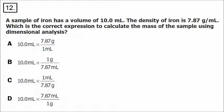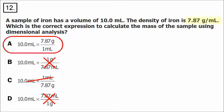Number 12 is a unit conversion. We're starting with 10 milliliters and have to convert from milliliters to mass in grams. We want milliliters on the bottom and grams on top, knowing there are 7.87 grams for every one milliliter based on the density. Choice B has 7.87 milliliters equal to one gram — that's backwards. Choice D has the same problem. Choice C has milliliters that won't cancel out because they're not on opposite sides. The correct answer is A: one milliliter on the bottom, 7.87 grams on top, so the units cancel properly.